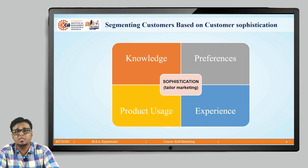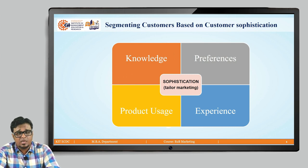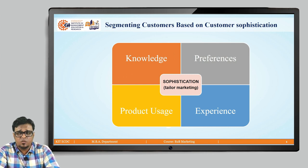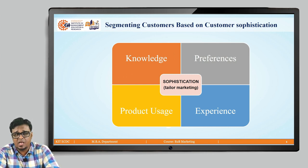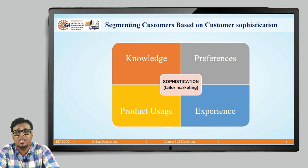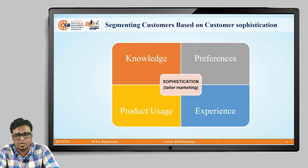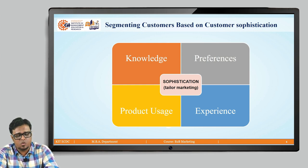Segmenting customers based on customer sophistication is done on the basis of the knowledge of the organization, the preferences that an organization has, the product usage that the business might have, and the experiences these businesses want to give to their customers. This is essentially a telemarketing strategy used in many organizations.